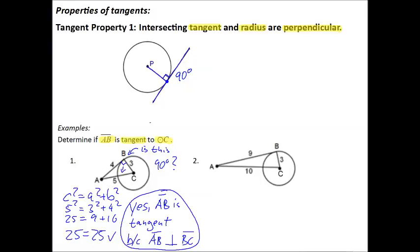Let's look at our next example. And again, we're supposed to find out if this is a right angle. Does it measure 90 degrees? Let's use our Pythagorean theorem.